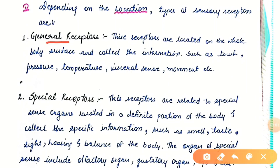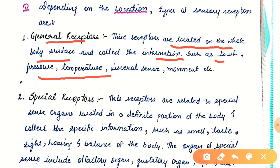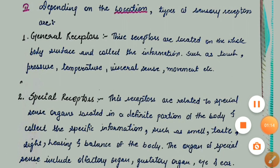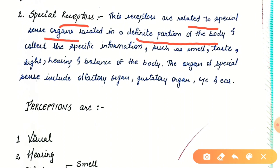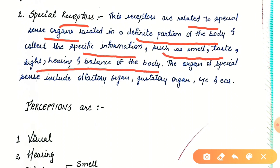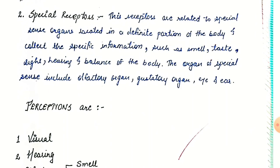General receptors are located on the whole body surface and collect information such as touch, pressure, temperature, visceral sense, and movement. Second, depending on location, are special receptors — these are related to special sense organs located in a definite portion of the body and collect specific information such as smell, taste, sight, hearing, and balance. The organs of special sense include the olfactory organ, gustatory organ, eye, and ear.